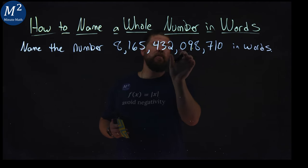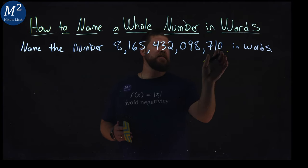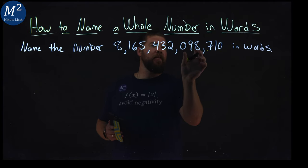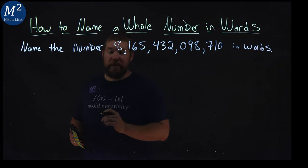You can see we have sections of three separated by commas that really break it down. We have the one section here and then these are like the thousands and this is the millions. We got billions and trillions right there.